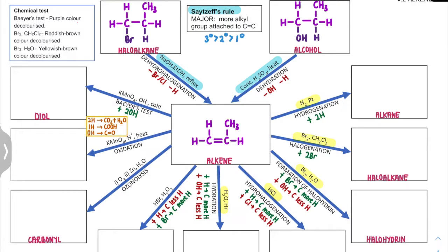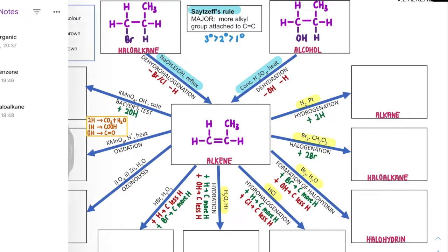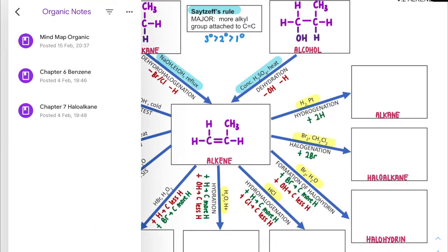Assalamualaikum and hello everyone. Welcome to the video for the MyMap for 5.2 Alkene. So, where can you get this MyMap? It is actually available on your Google Classroom. When you see under the topic of organic notes, you can see the first one is MyMap Organic.